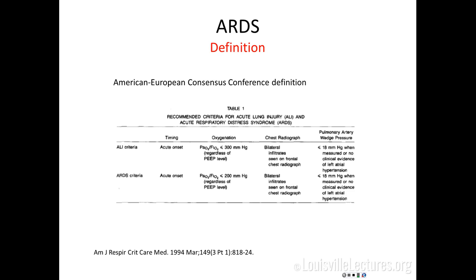Starting with the definition of ARDS, this is the old definition from 1994. In the old definition, you had acute lung injury — it was an acute process, the PO2/FiO2 ratio was less than or equal to 300, you had bilateral infiltrates on the chest X-ray, and it should not be due to heart failure, so the wedge pressure should be equal to or less than 18, or there should not be clinical evidence of heart failure. ARDS was pretty much the same as acute lung injury, except the PO2/FiO2 was less than or equal to 200.